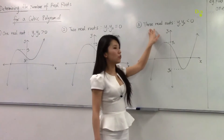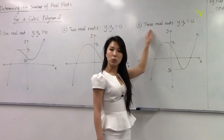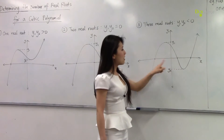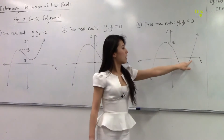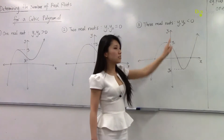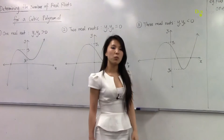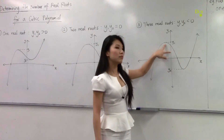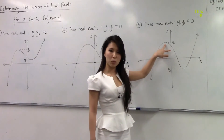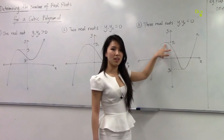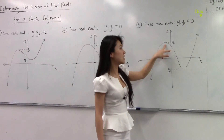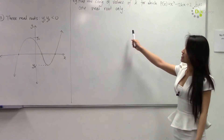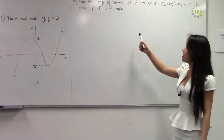In situation number three, in order for a cubic polynomial to have three real roots, the product of the y-values of the stationary points must be less than zero.